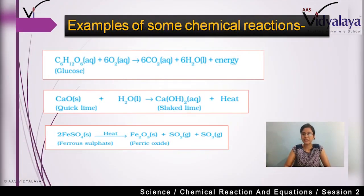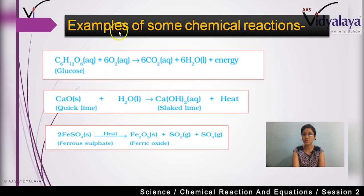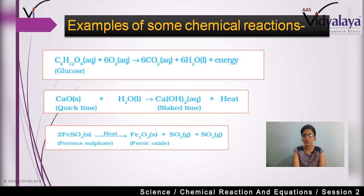For example, a very simple example I gave you in Session 1: when water is formed, how is it formed? When oxygen and hydrogen react with each other. Here the example is: first, glucose and oxygen react, and they decompose into carbon dioxide, water, and energy. Similarly, when calcium oxide (CaO) reacts with water, slaked lime is formed and heat is released. Also, when ferrous sulfate is heated, it decomposes into ferric oxide, SO₂, and SO₃. So these are all examples of chemical reactions.